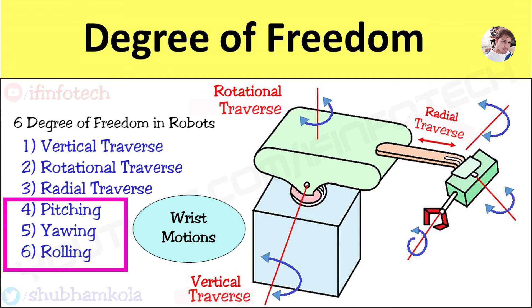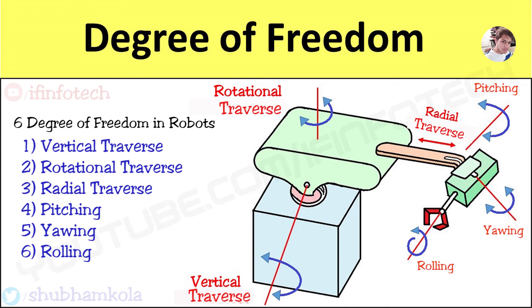Next 3 motions are wrist motions. In that, first one is pitching. This motion provides up and down movement to wrist through the linkages which is shown here.